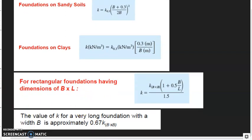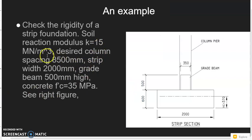Here we can see an example. We need to check the rigidity of the foundation with column loads. As I mentioned before, for column combined footing, we always check the rigidity of the foundation before we start the design. The soil reaction modulus here is 15 and the desired column spacing is 8.5 meters.